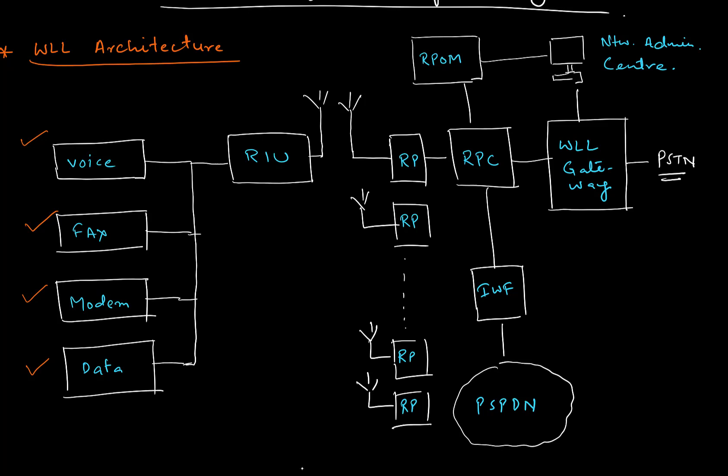All these services are delivered by the RIU, which stands for Radio Interface Unit. The Radio Interface Unit supports around 1 to 32 subscribers. This device is either a desktop device or a wall-mounted device.